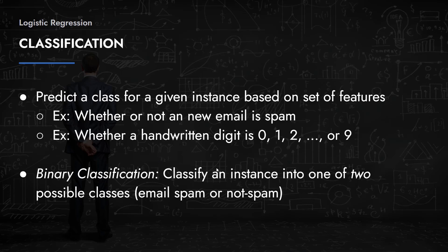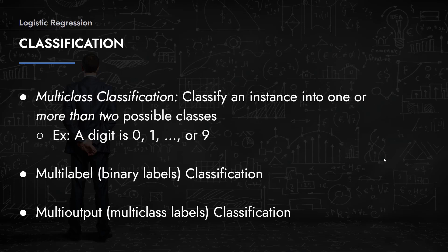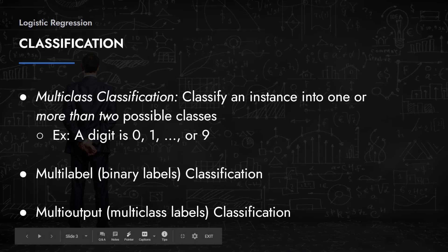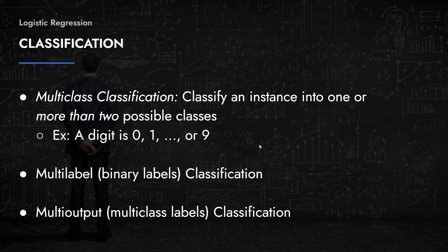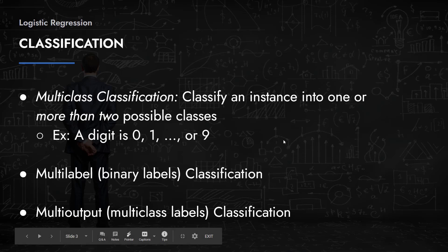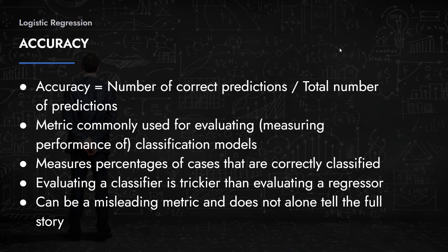Multi-class classification is where you classify an instance into one of more than two possible classes, such as the digits example. There are also multi-label classification models and multi-output or multi-class labels, but those are more advanced topics. A simple understanding of binary classification suffices most of the time.